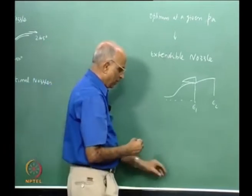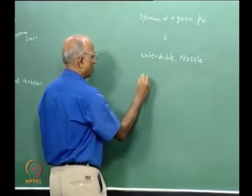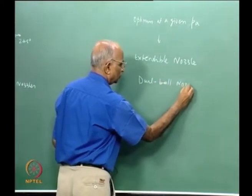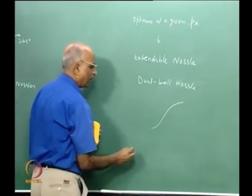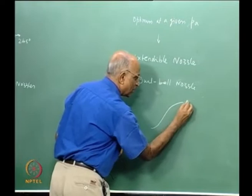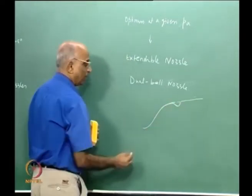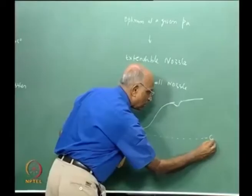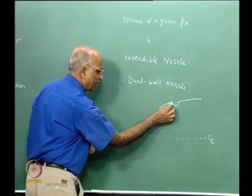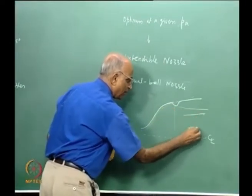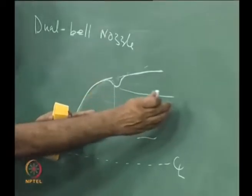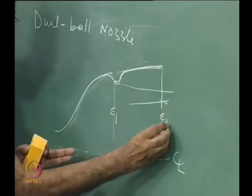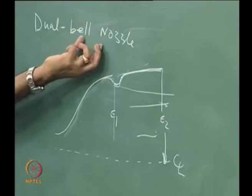Instead of having an extendable nozzle, another alternative is to have a dual bell nozzle. I have a nozzle and I want to increase the area ratio further. What I do is put something like a step partway along the nozzle wall and then continue the nozzle profile beyond it. At lower altitude, the flow expands to the ambient pressure, separates at the step, and flows over the outer section. At higher altitude, because the pressure beyond the step is much higher than ambient, the flow reattaches. Therefore I can get area ratio ε₁ at low altitude and area ratio ε₂ at high altitude.